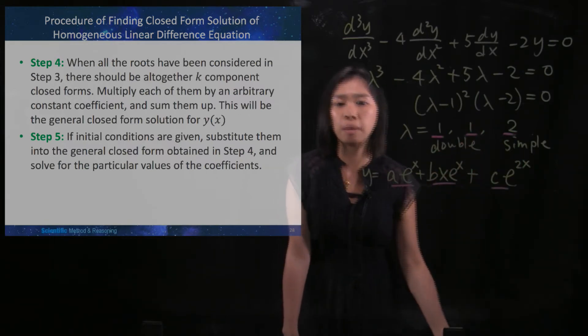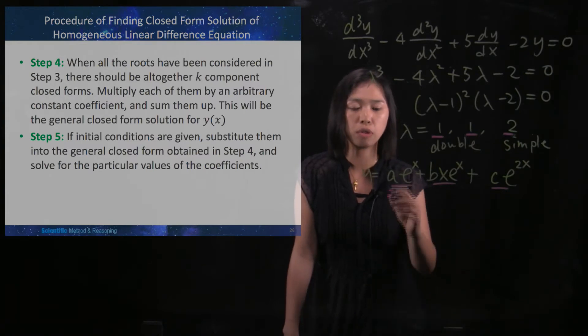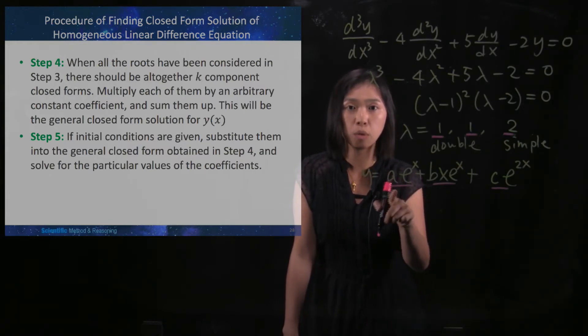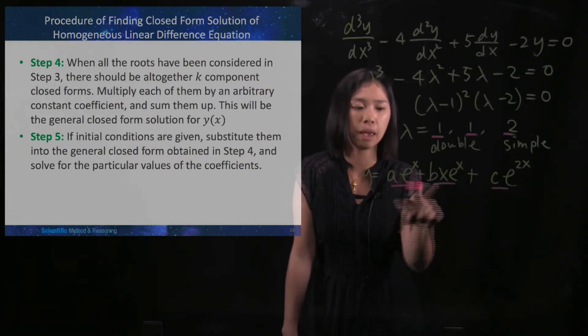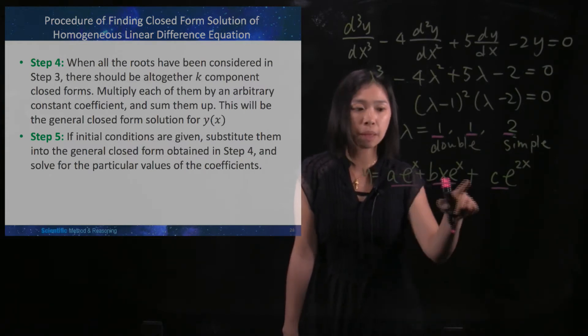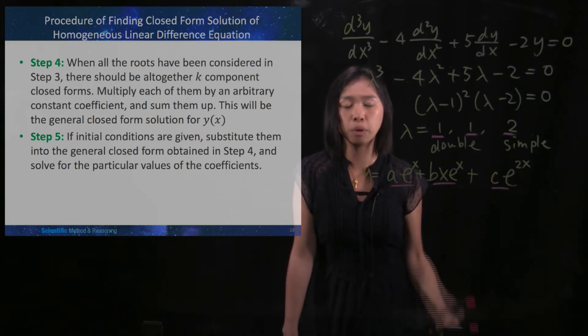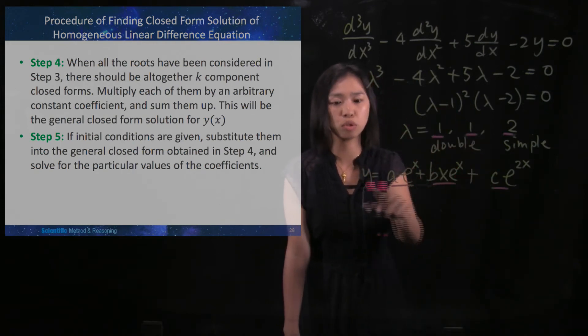We multiply them by an arbitrary constant coefficient — here we multiply them by a, b, and c. We sum them up, and then there will be the closed form solution.